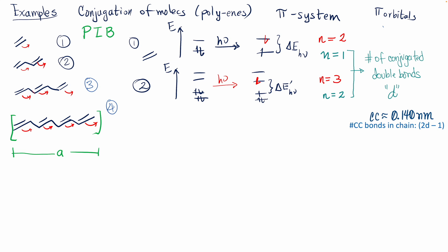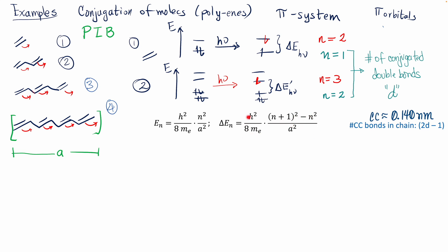We'll use the particle-in-a-box energy equation, which goes as n squared, with a bunch of constants. The box length L is also a variable. The transition energy is then proportional to [(n+1)² − n²] divided by L², all multiplied by those constants.